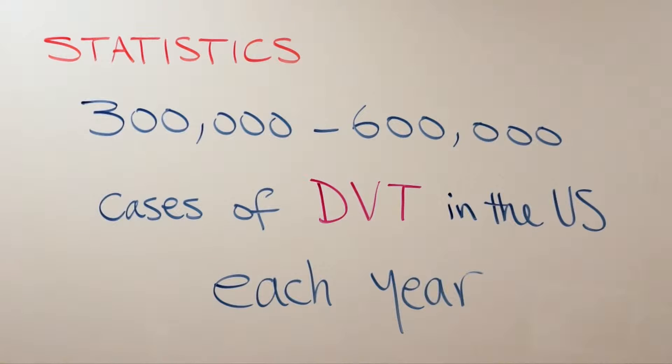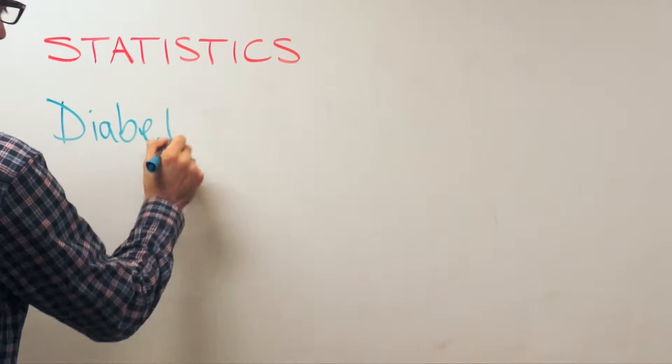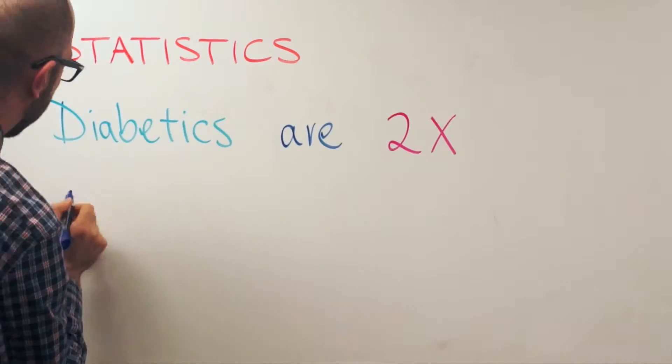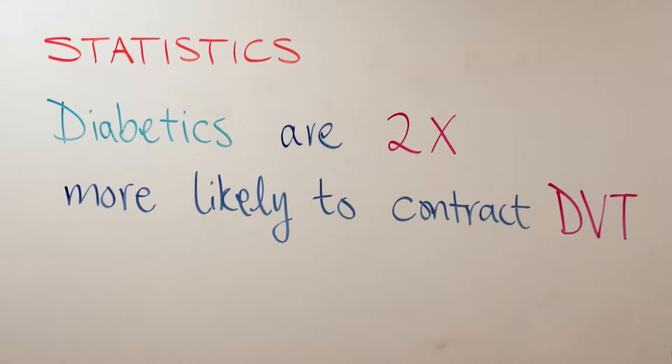Of that, an estimated 60 to 100,000 will die from complications associated with DVT. Additionally, diabetics are two times more likely to contract DVT and suffer from similar circulation issues in the legs.